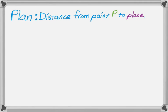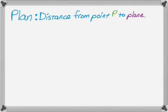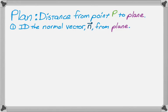So let's come up with a plan for how we can do this. So the distance from a point P to a plane. The first thing I do is I identify the normal vector n from the plane. So you just pull that right off.